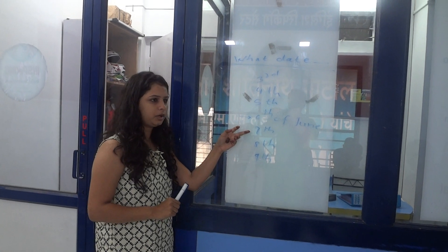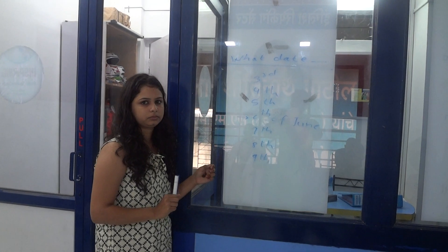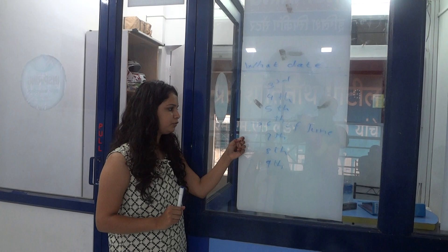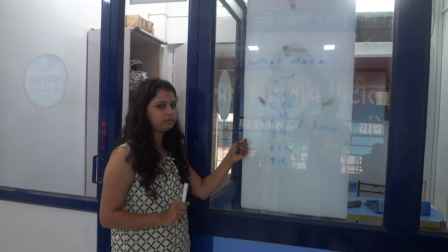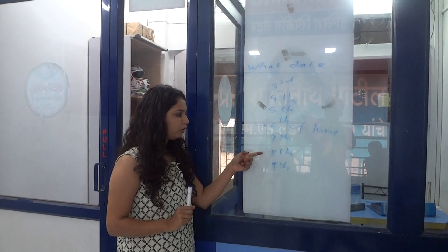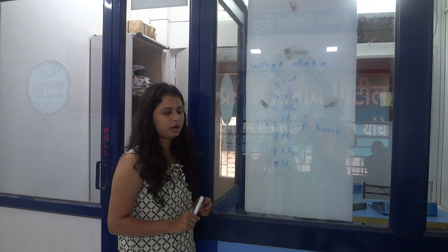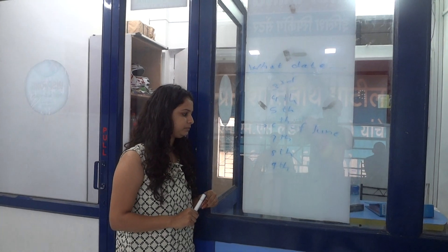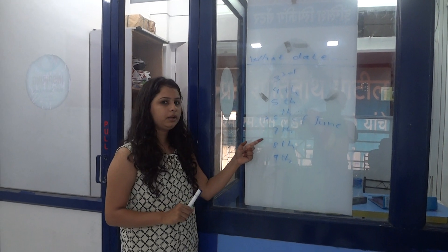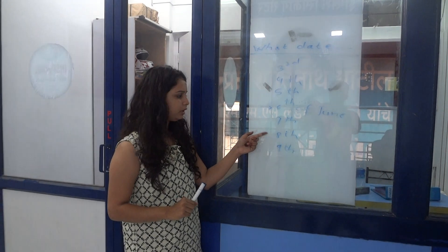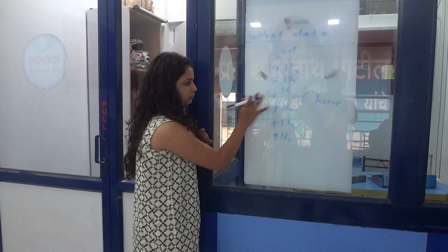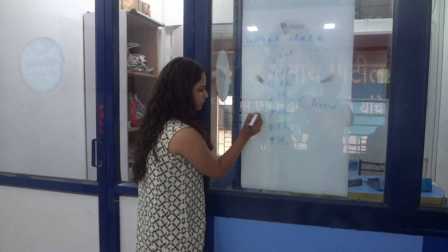What date will be tomorrow? It will be 7th of June tomorrow. What date will be the day after tomorrow? It will be 8th of June the day after tomorrow.